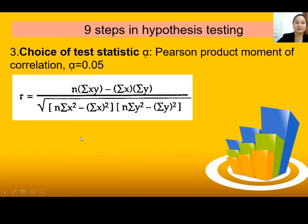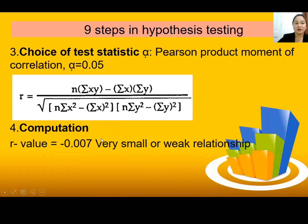Here is the formula of the correlation r. For computation, no need to compute by hand — you may use Excel, SPSS, or Minitab. The r value obtained is negative 0.007, indicating a very small or weak relationship. The p-value is 0.976. Later I will show how to solve the p-value and r-value using Microsoft Excel.